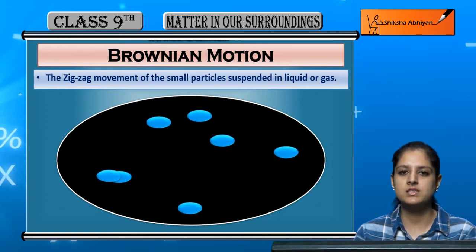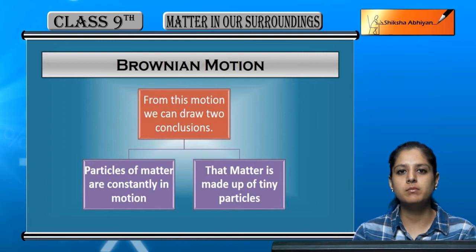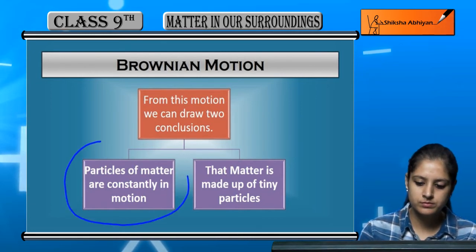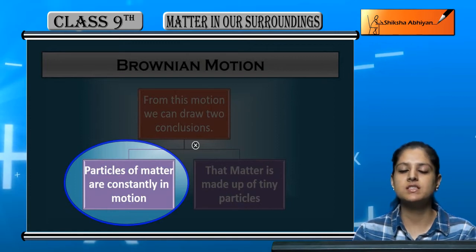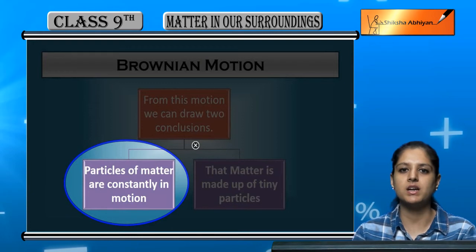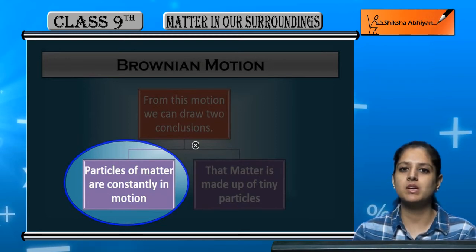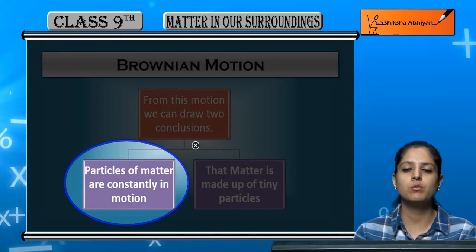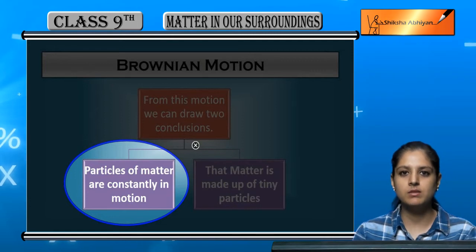Brownian motion is observed in matter. From this, we can draw two conclusions. The first conclusion we can draw from Brownian motion is that particles of matter are constantly in motion. We have talked about zigzag movement of suspended particles in liquids or gases. So from Brownian motion, we can conclude that particles of matter always move — they are constantly in motion.